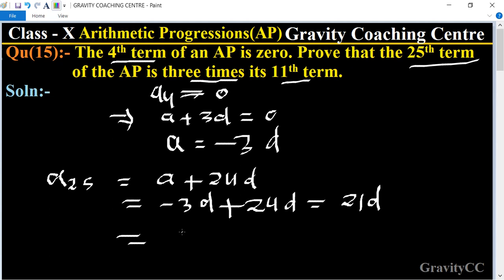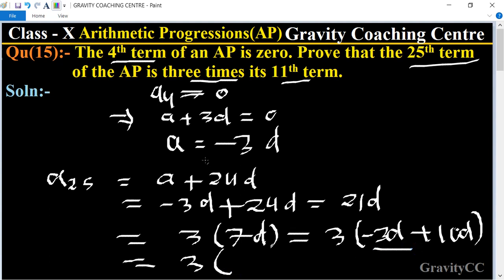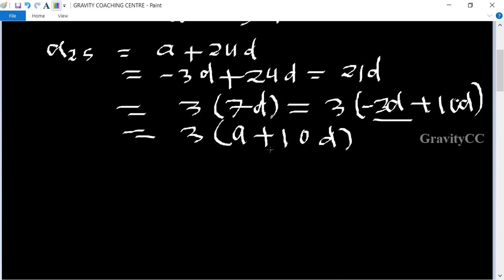This equals 3 times its 11th term. So 3 times 7 equals 21, which equals 3 times (minus 3d plus 10d). This equals 3 times (a plus 10d), which is the 11th term.